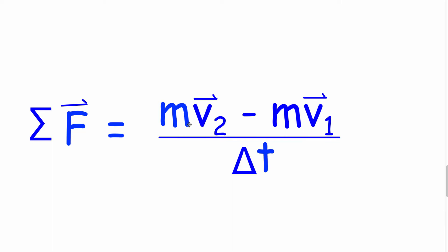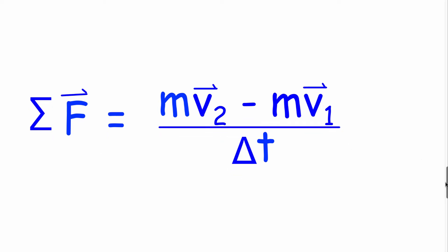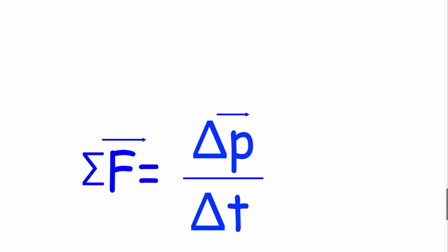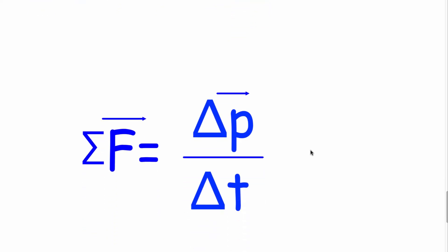So this is momentum at the end of an interaction. This is momentum at the beginning of an interaction over time interval, which will be equal to the sum of all forces. So we could write it to look like this: the sum of all forces is equal to change in momentum over change in time.